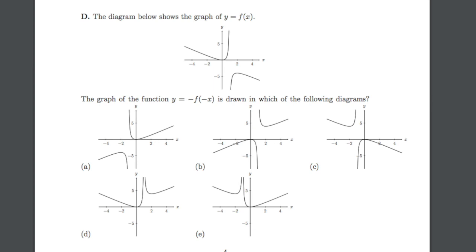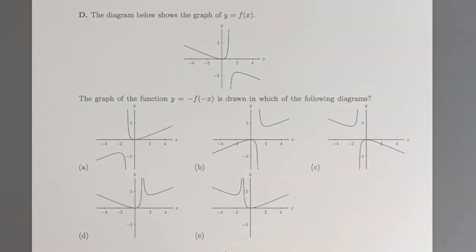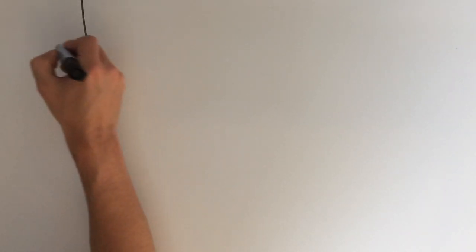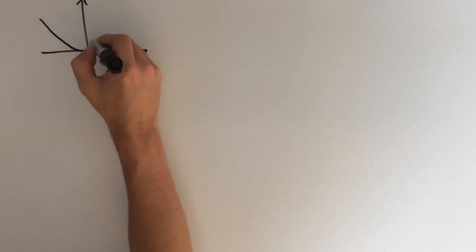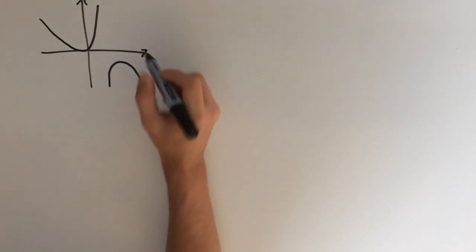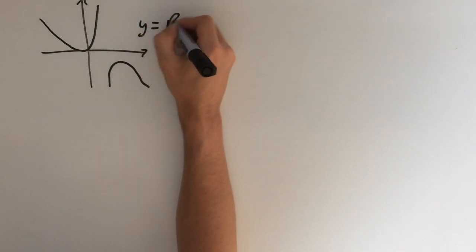So let's try and break down what's going on. We're given this arbitrary function, y equals f of x. Let's try and draw what it looks like. Up here, and down here. So this is y equals f of x.